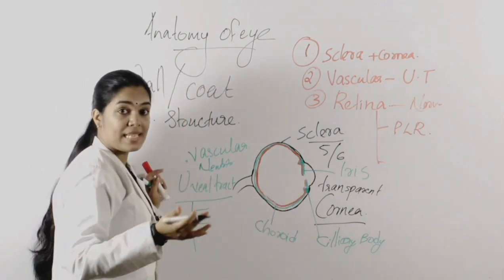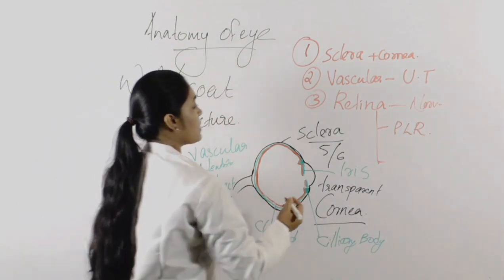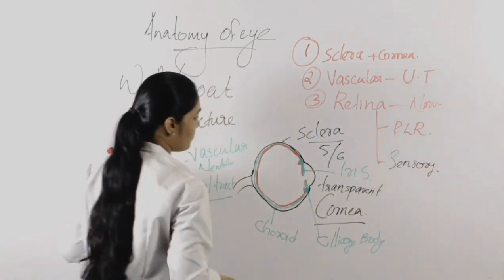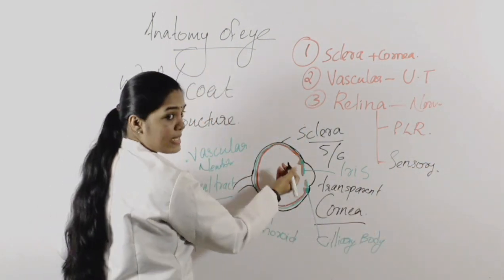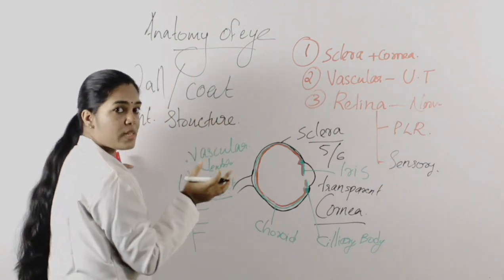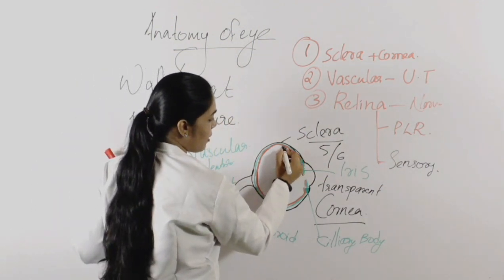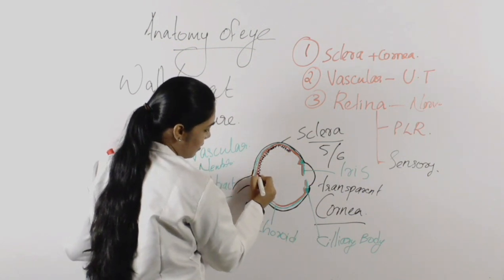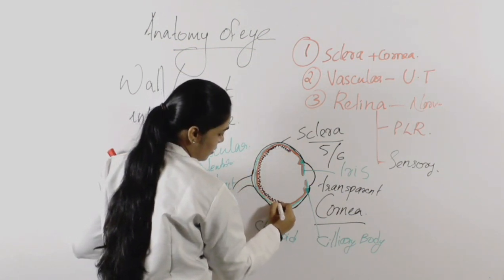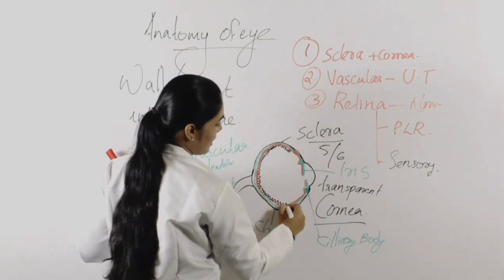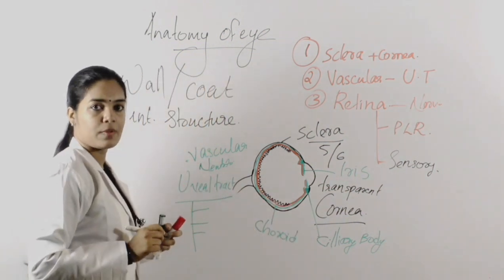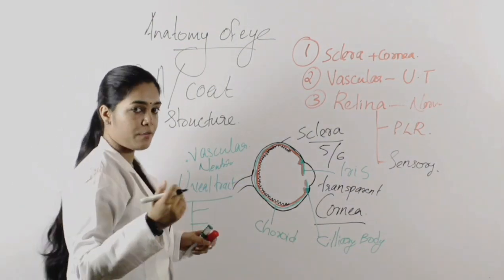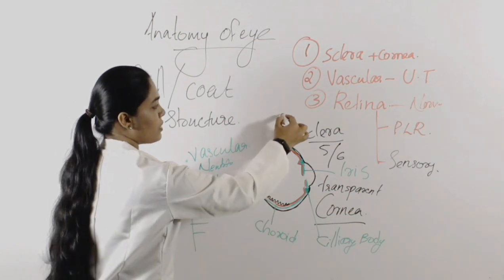The second layer of retina is known as the sensory layer of retina, or we can say the neural layer of retina. It lies inside — it is the innermost layer, lying inside the pigmented layer of retina. This is the nervous or neural layer of retina.